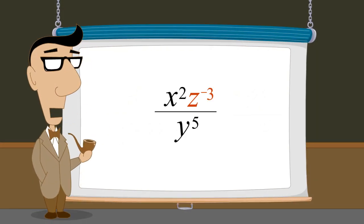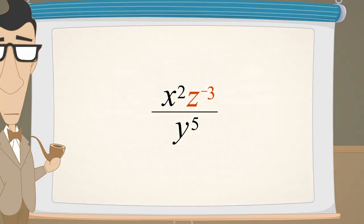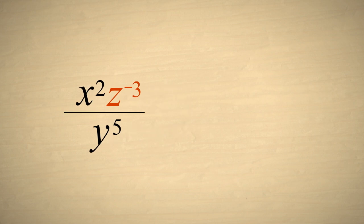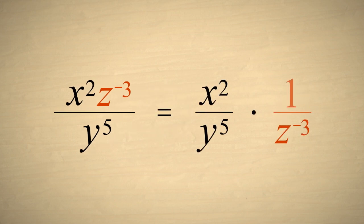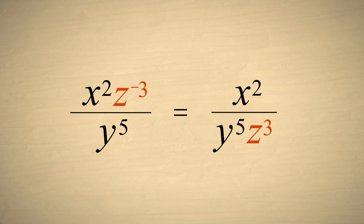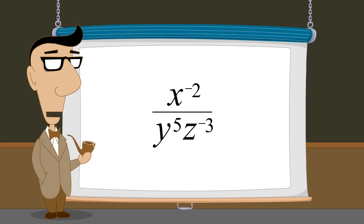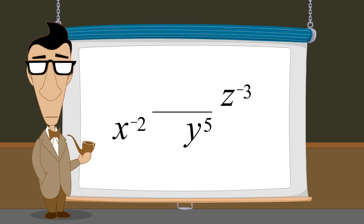Likewise, we can eliminate a term with a negative exponent in the numerator of an expression. We separate this term from the rest of the expression, rewrite it as one over the same term with a positive exponent, and recombine it with the rest of the expression. So in an expression written as a fraction, we can move any exponential term from the denominator to the numerator, or from the numerator to the denominator, as long as we switch the sign of its exponent.